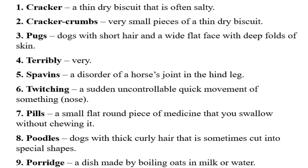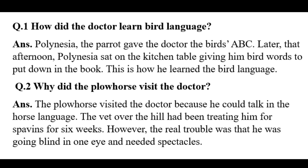Seventh: pills - a small flat round piece of medicine that you swallow without chewing it. Eighth: poodles - dogs with thick curly hair that is sometimes cut into special shapes. Ninth: porished - a dish made by boiling oats and milk or water.